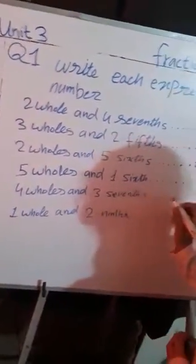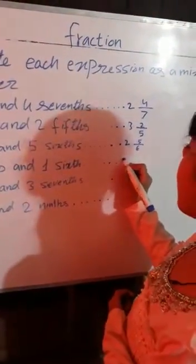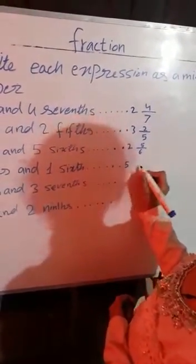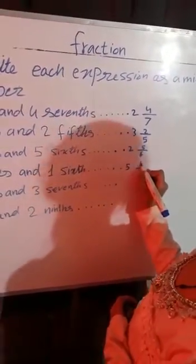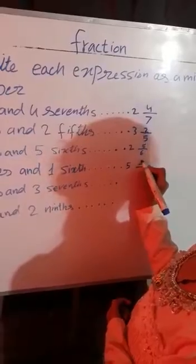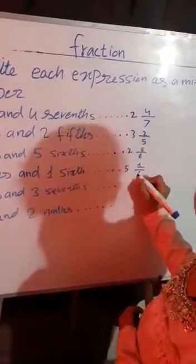Now we are doing Part D: 5 whole and 1/6. So we will write 5 on the side part, 1 on the numerator side, and 6 on the denominator side.